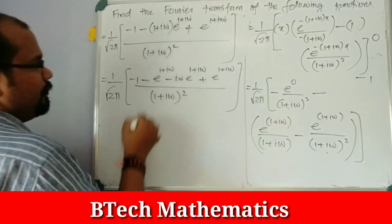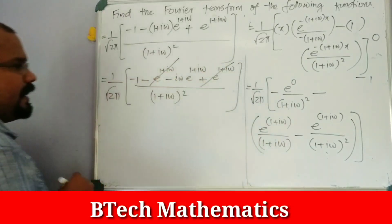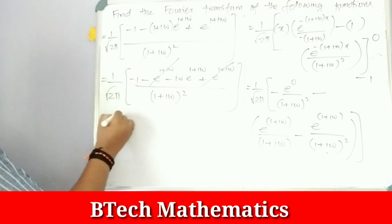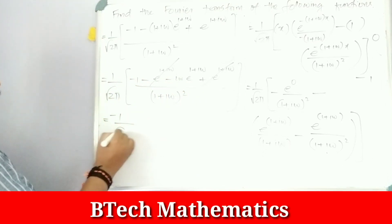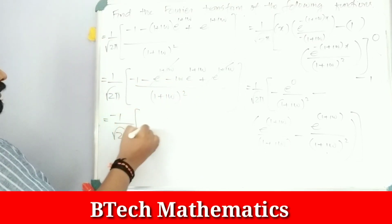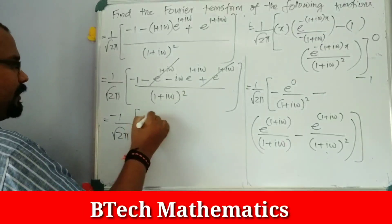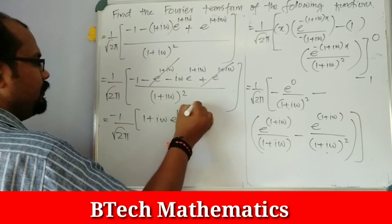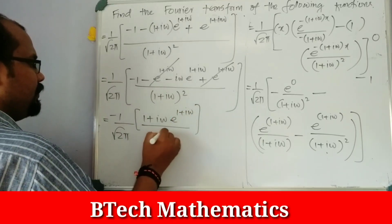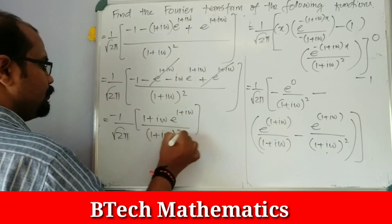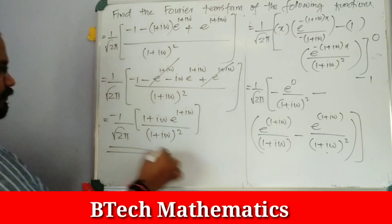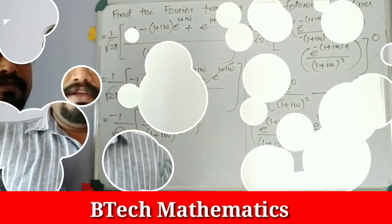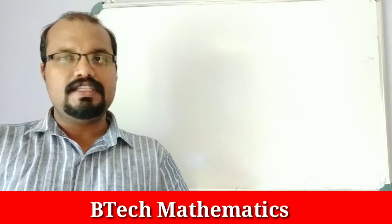Taking positive and negative terms and simplifying, the final Fourier transform is 1 over root(2π) times (1 + i·ω)·e raised to (1 + i·ω) divided by (1 + i·ω) squared. That completes the Fourier transform problems for this video.